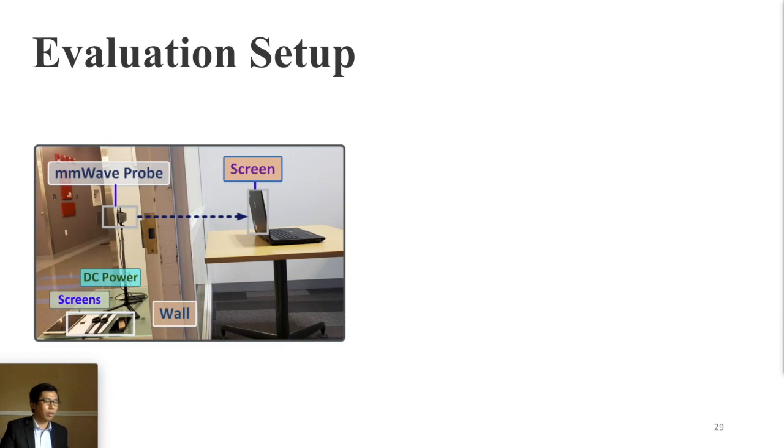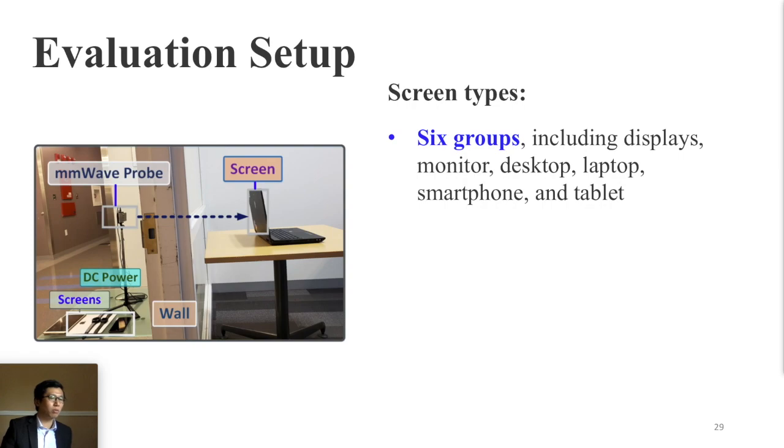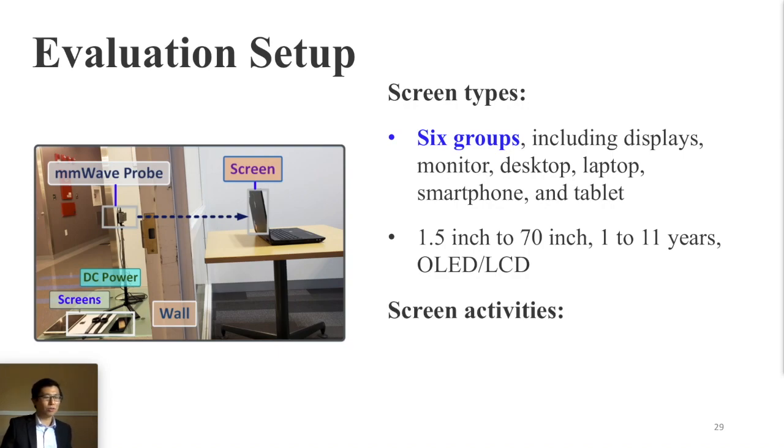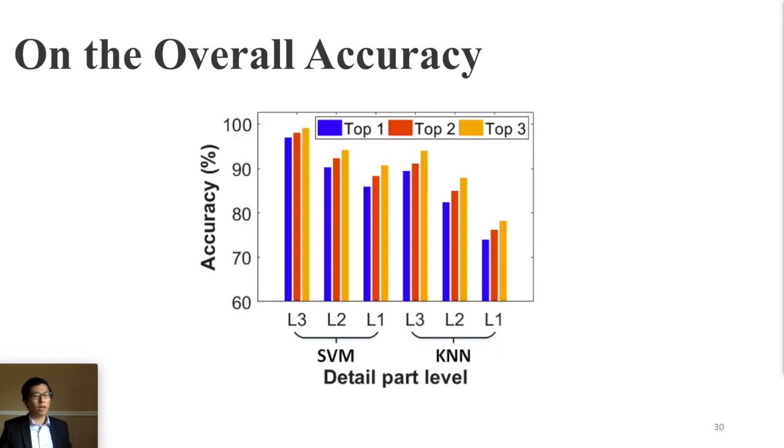So here is more detailed information in the evaluation part to test if our system can work in real-world settings. We totally encountered six different groups with different conditions of the screens. We also tested with 100 different screen activities by our 10 volunteers. There are three aspects about the evaluation.